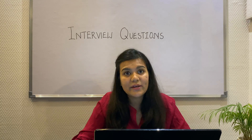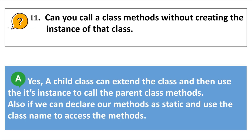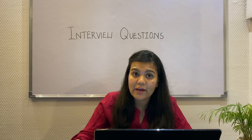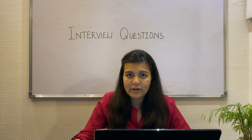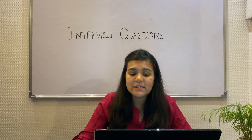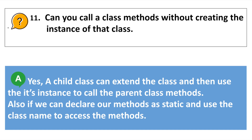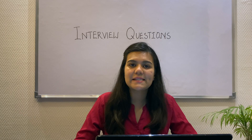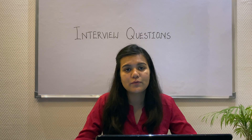Next question: Can you call a class's methods without creating an instance of the class? Yes, we can call methods without creating an instance in two ways. First, inheritance — a child class can extend the parent class and use the child class instance to call the parent class methods. Second, declaring methods as static and using the class name to call them. I will be discussing the static keyword in later videos.